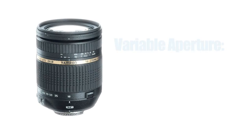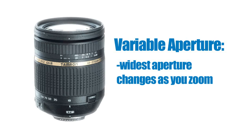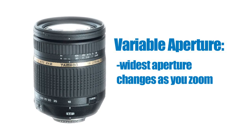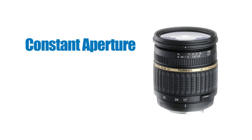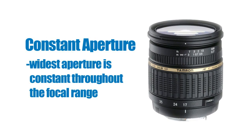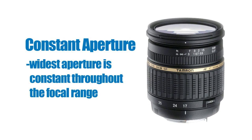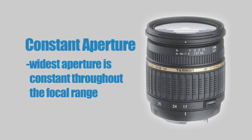Most zoom lenses, like the Tamron 18-270, are what's called variable aperture lenses. That means the widest aperture changes as you zoom. There are also lenses like the f17-50 f2.8 Tamron, which are constant f2.8 lenses. It's a common misconception that if someone says a constant aperture lens, it means that you can't change the aperture.